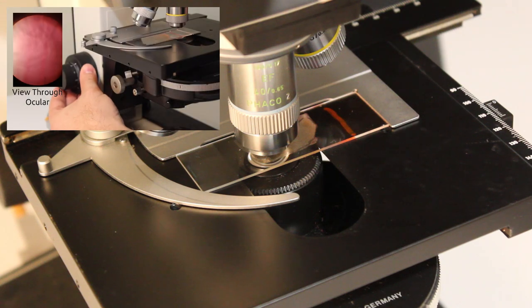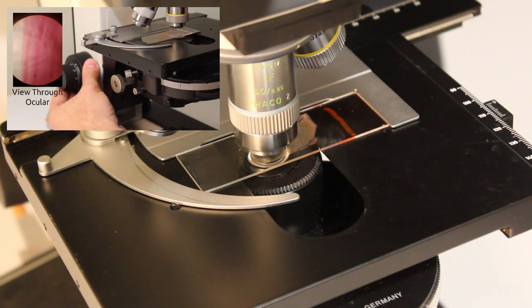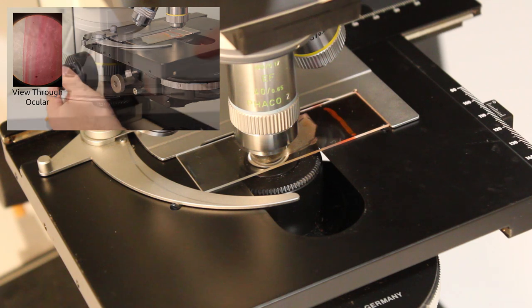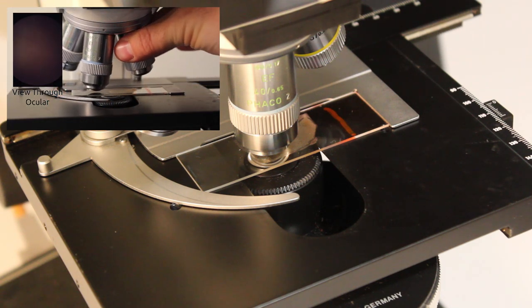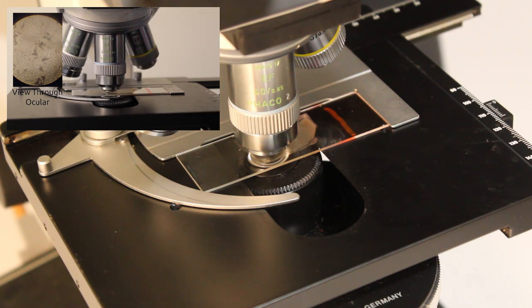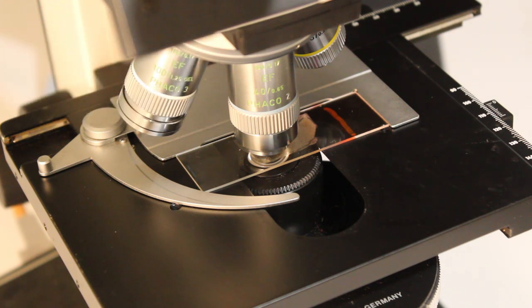I'm going to assume in this video that you already know how to properly focus on your sample and change magnification. If you're not familiar with these methods, please go to Episode 3 where I cover these topics. For this video I'm also going to assume that you've properly aligned your condenser, which I will cover in the next video in Episode 5.